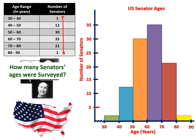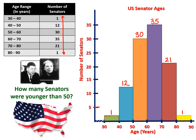I like to write the number on top of the bars, especially when I have to estimate — that's just helpful when you're answering questions on a quiz or worksheet. How many senators were younger than 50? I can draw a line at 50 and see that I have 12 plus 1, so 13 senators are younger than 50.